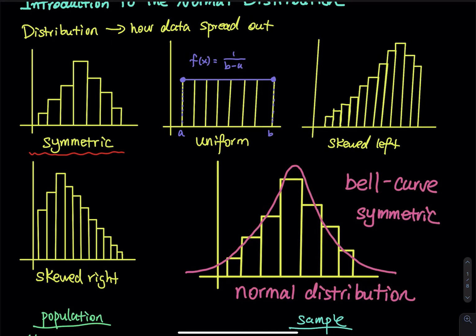Look at the pink curve drawn here. Instead of using bars, I use a curve. This curve is called a bell curve because it looks like a bell, and this distribution is called normal distribution.